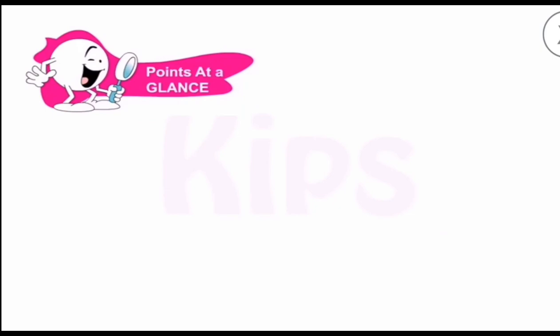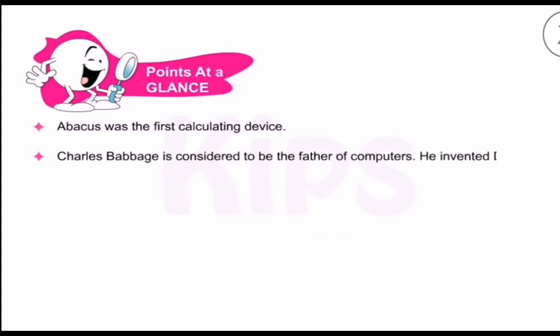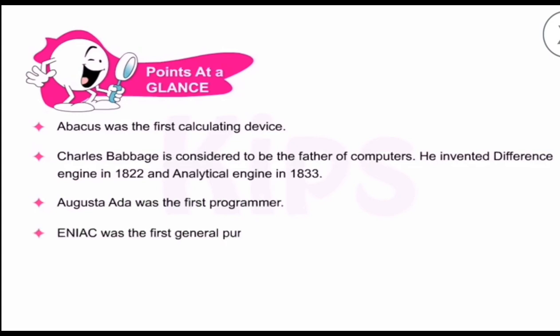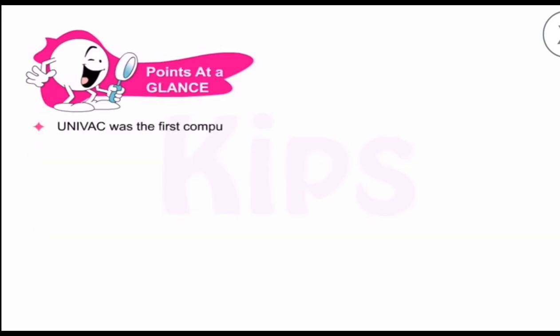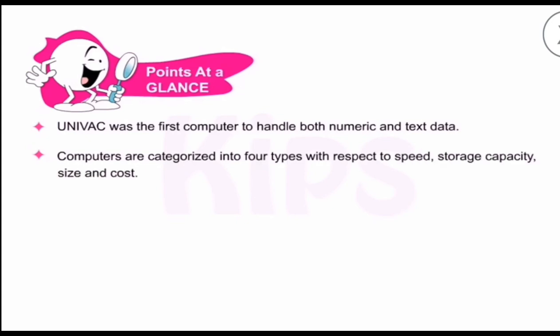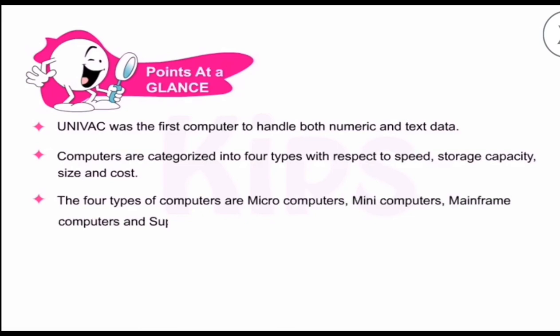Let's do a quick recap. Abacus was the first calculating device. Charles Babbage is considered the father of computers and invented the difference engine and analytical engine. Augusta Ada Lovelace was the first programmer. ENIAC was the first general-purpose electronic digital computer. UNIVAC was the first computer to handle both numeric and text data. Computers are categorized into four types with respect to their speed, storage, size, and cost. The four types of computers are microcomputer, mini, mainframe, and supercomputer. Thank you.